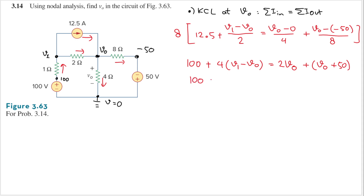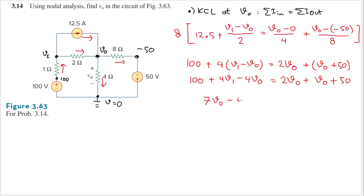Distributing gives 4v1 minus 4v0 on the left, and 2v0 plus v0 plus 50 on the right. Combining: 2 plus 1 is 3, and 3 plus 4 gives 7, so we have 7v0. Moving terms: 100 minus 50 equals 50, giving us 50 equals 4v1 minus 7v0 plus 50. This is equation number one: 4v1 minus 7v0 = 50.